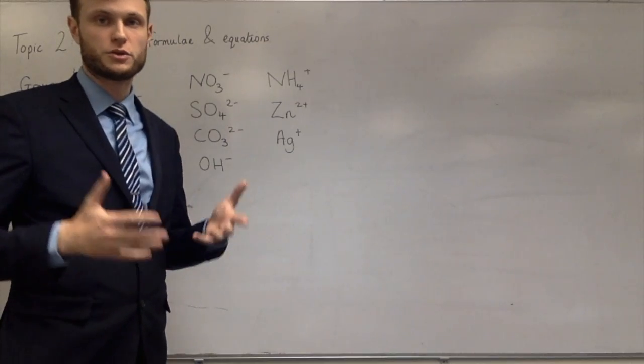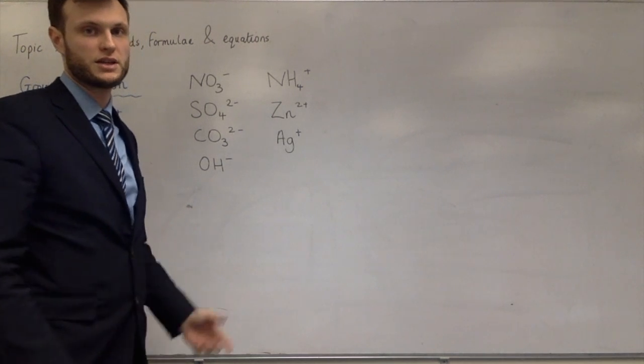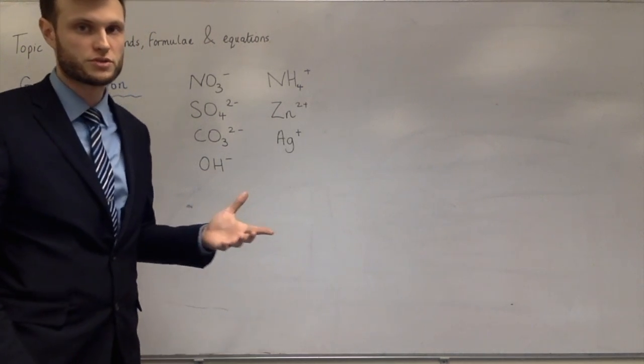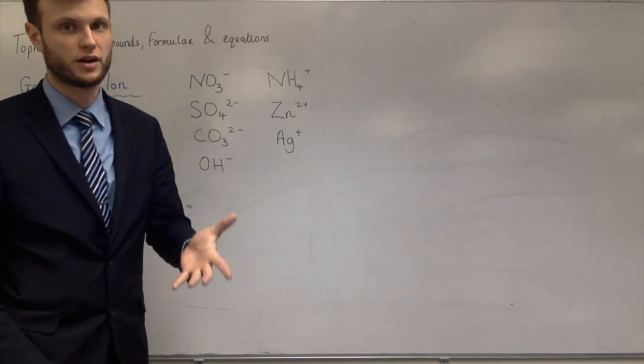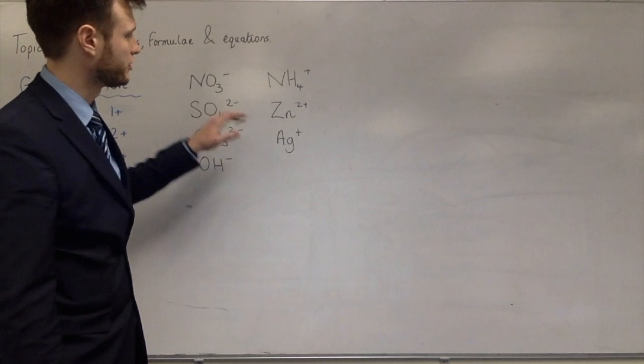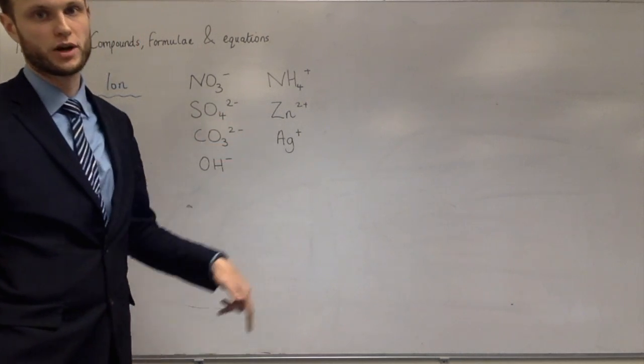You combine ions so that the number of positives and the number of negatives cancel out. For example, for sodium carbonate, you'd need two sodiums, because sodium is in group 1 so it makes 1+ ions, for every one carbonate, which is a 2− ion.